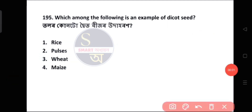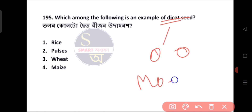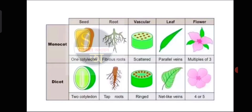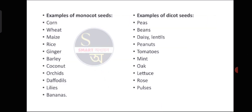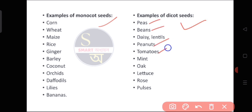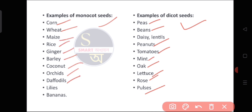Question number 195: Which among the following is an example of a dicot? Dicots include peanuts, tomatoes, mint, oak, lettuce, rose, and pulses. Monocots include corn, wheat, rice, ginger, barley, coconut, orchids, daffodils, lilies, and bananas. Pulses are the correct example of a dicot.